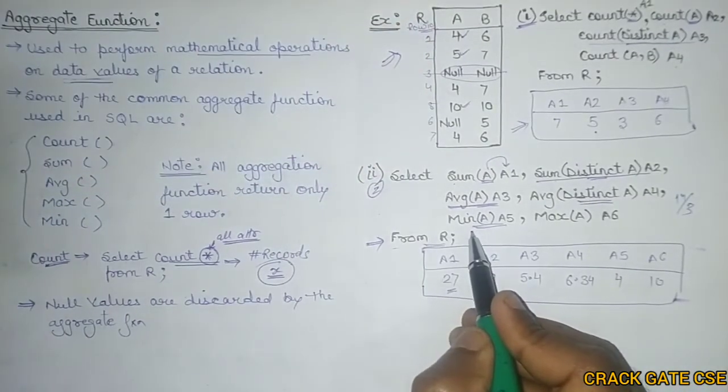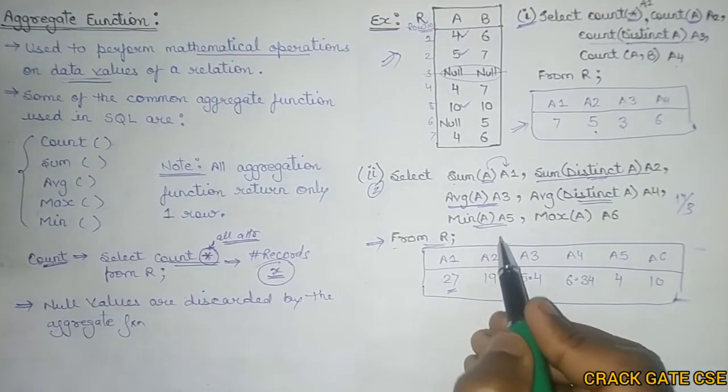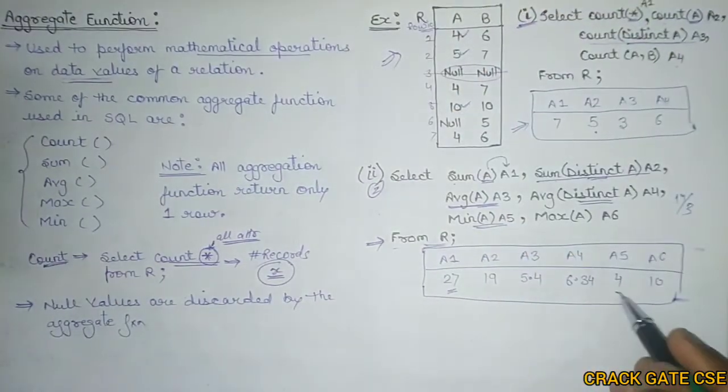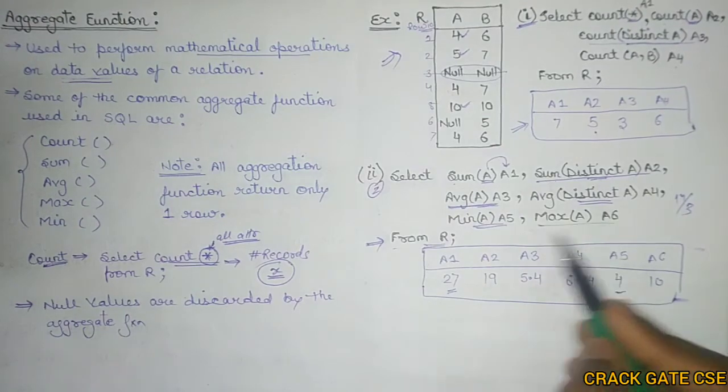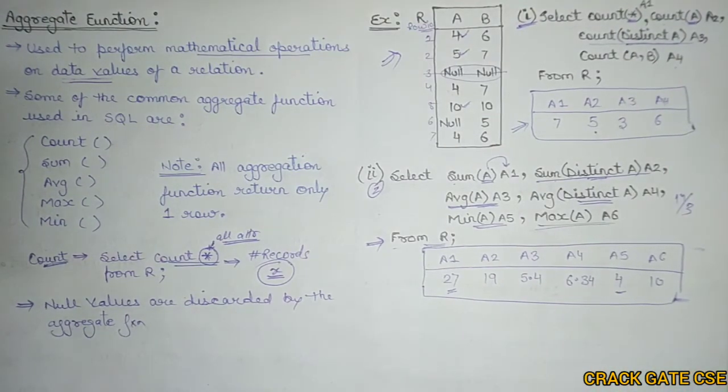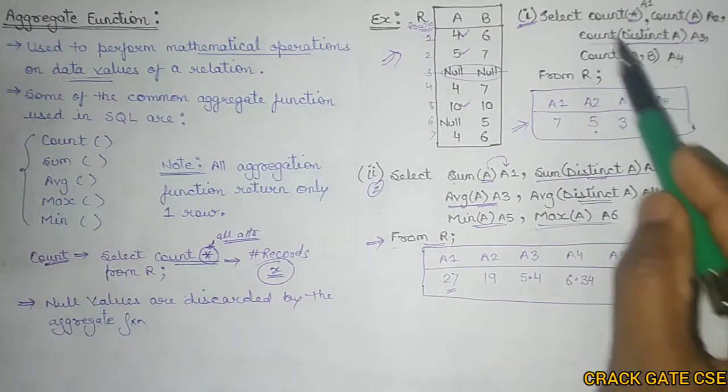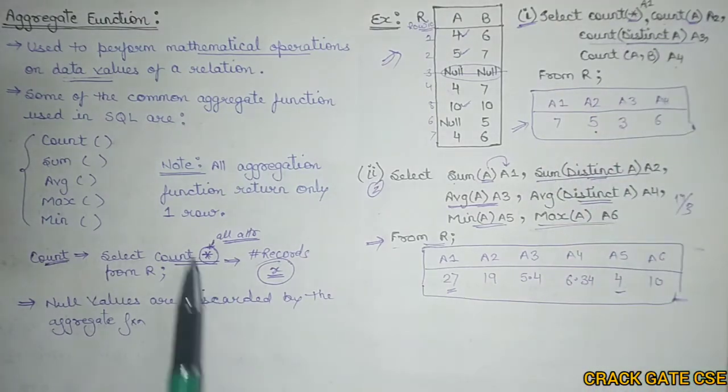Next, we have to find out the minimum value of A and store it in A5. So what is the minimum value? Minimum value is 4 and it has been stored in A5. Similarly, in A6, we have to store the maximum value of A which is 10. So here you can see that all these aggregate functions are giving you exactly one row as output.